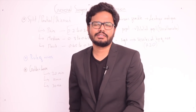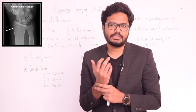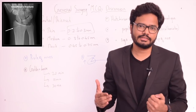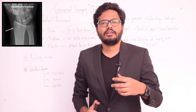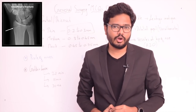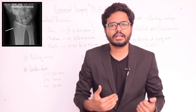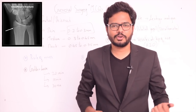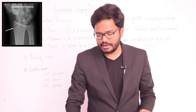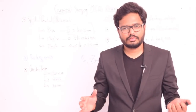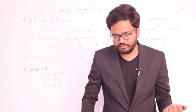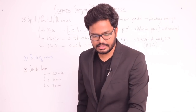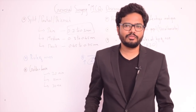Hutchinson's fracture is a fracture of the radial styloid process, also called chauffeur's fracture or backfire fracture. The matching answer order is: Hutchinson's freckle → lentigo maligna, Hutchinson's pupil → uncal herniation, Hutchinson's sign → herpes zoster ophthalmicus, Hutchinson's teeth → congenital syphilis, Hutchinson's fracture → radial styloid process. The answer is option A.